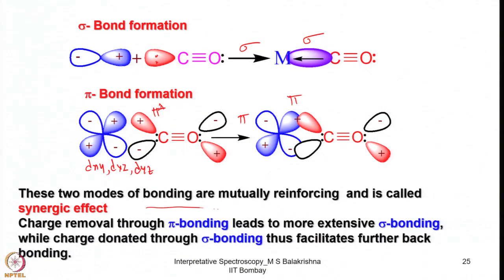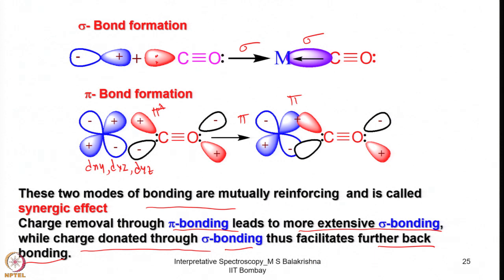Charge removal through π-backbonding leads to more extensive sigma bonding, while charge donated through sigma bonding facilitates further backbonding. This mutual give-and-take strengthens the metal–carbon bond, making the complex more stable.